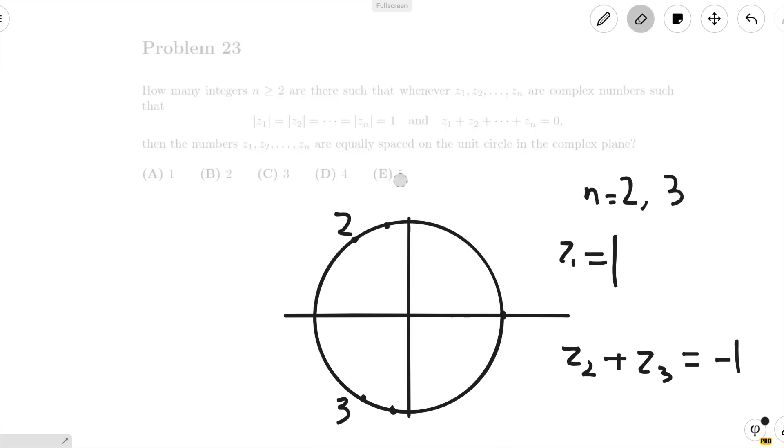Now how about when n equals 4? Now n equals 4, we can easily verify that it actually doesn't work. And here's why. We can put z₁ here on the x-axis, and we can put z₂ here, and put z₃ here, not on the y-axis, and z₄ here on the opposite of z₃.